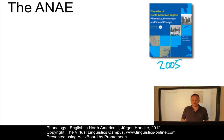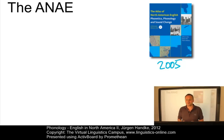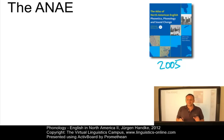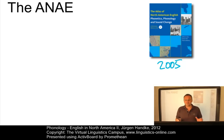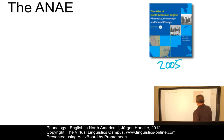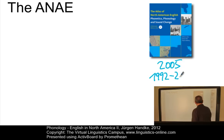The Atlas of North American English is based on a large telephone survey of the urbanized areas of all English-speaking people in North America. It was conducted by the world's leading sociolinguist, William Labov, between 1992 and 2003, which was the research period.